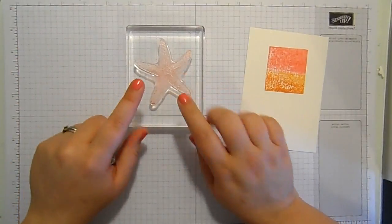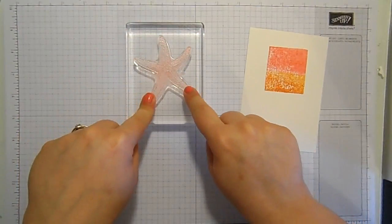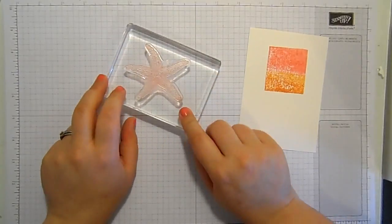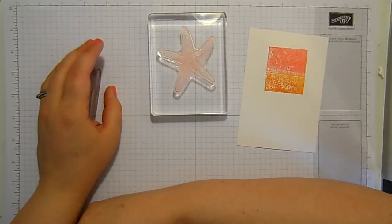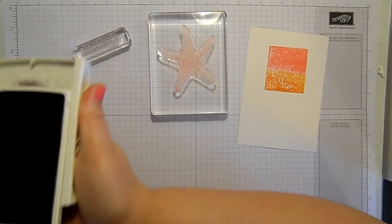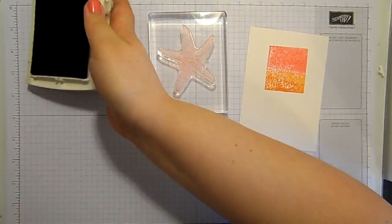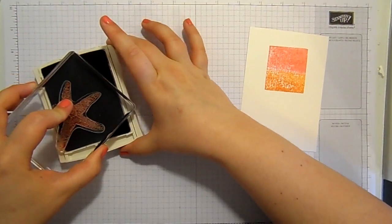So I've also then got the second half or the second stamp for the starfish. Can you tell my brain isn't working at all? And I've got a sentiment on my Basic Black ink pad. Starfish! That's what it is. It's a starfish. Oh, you know.